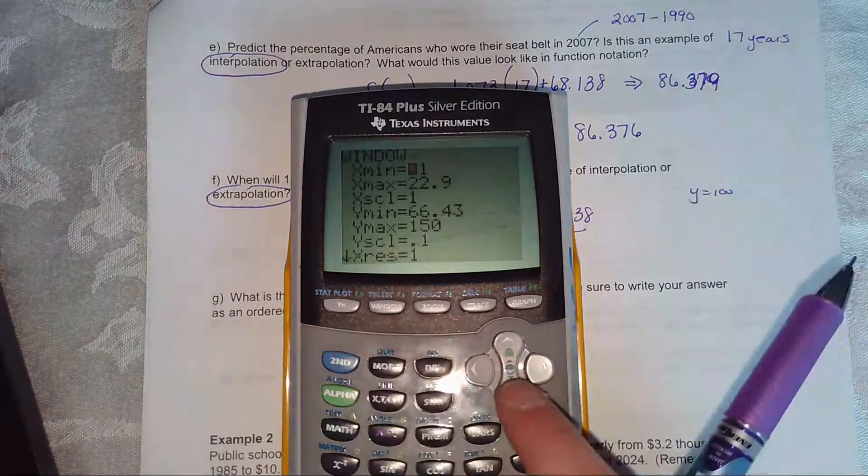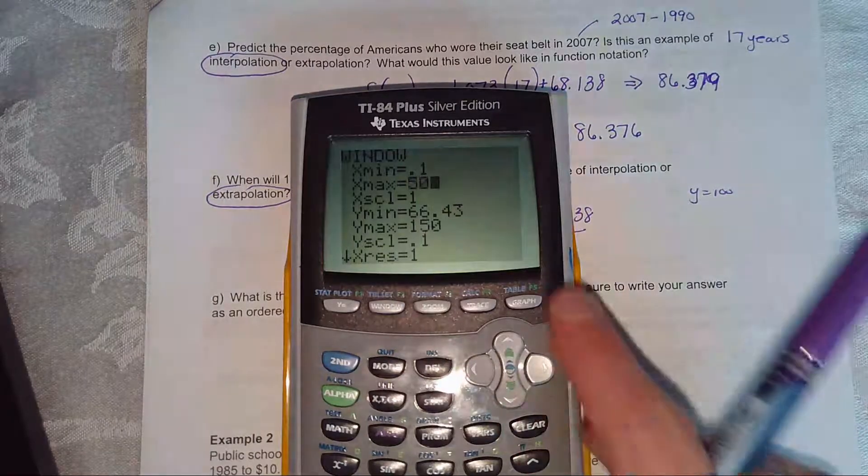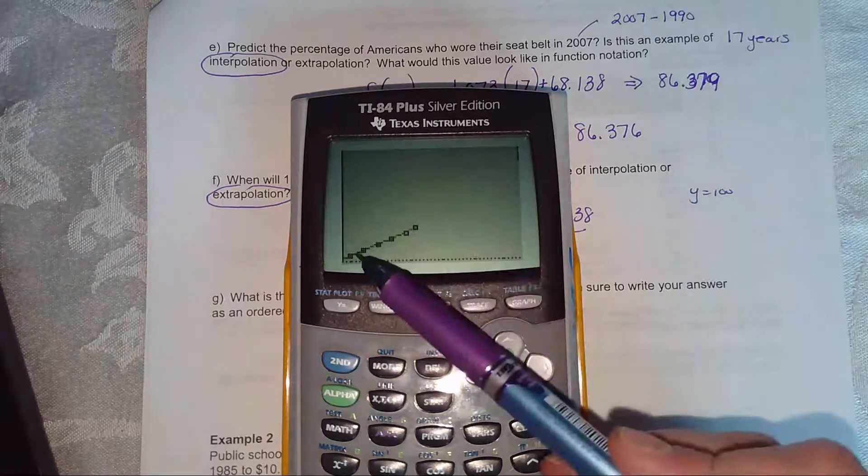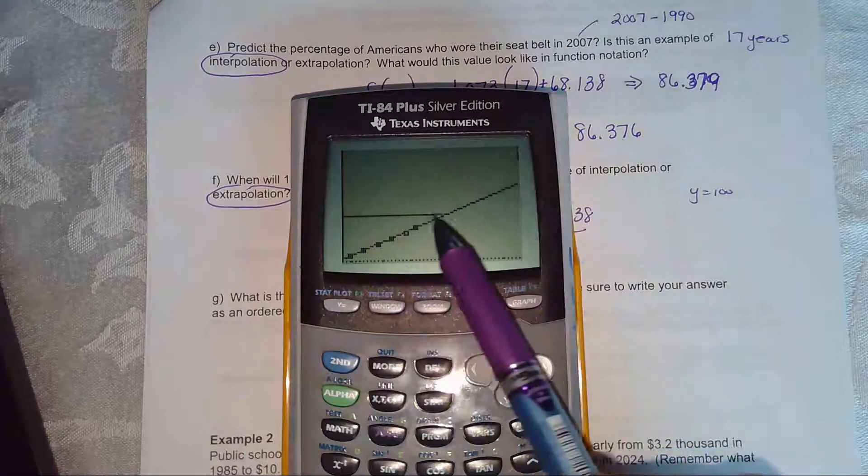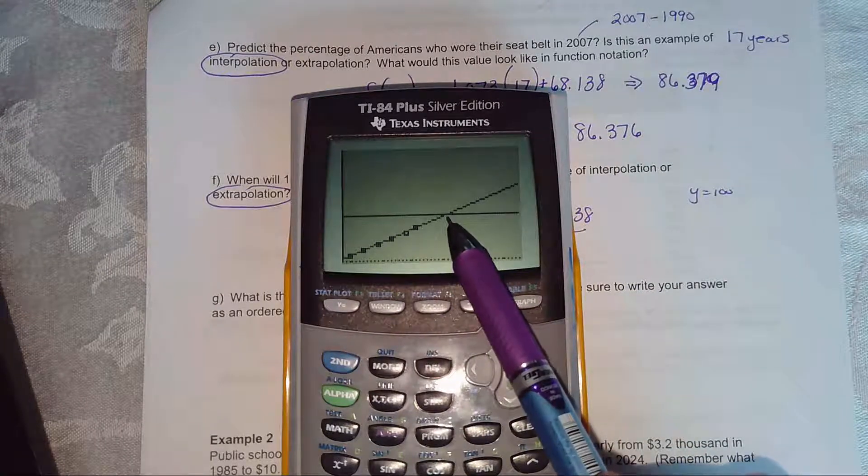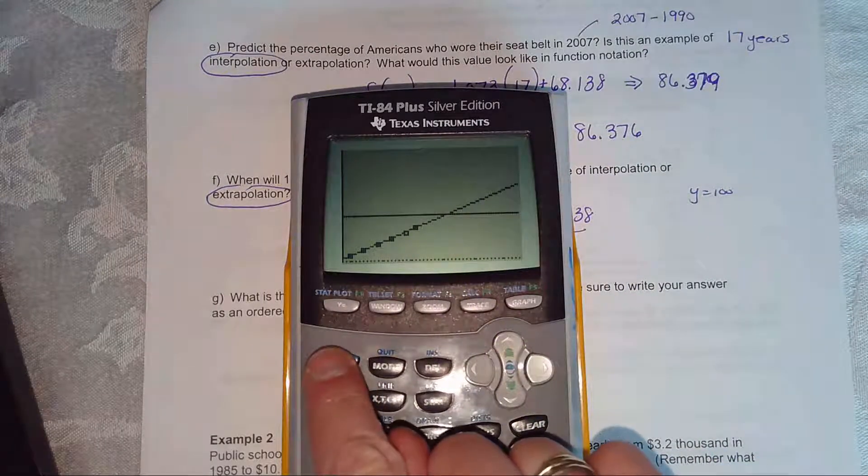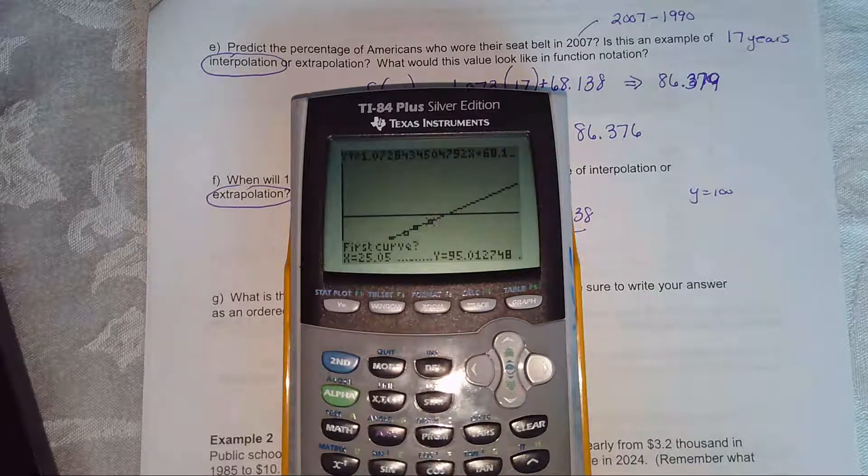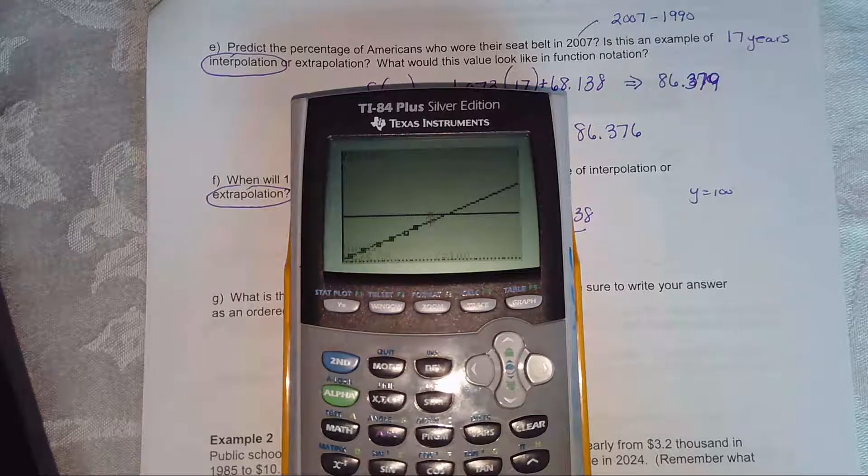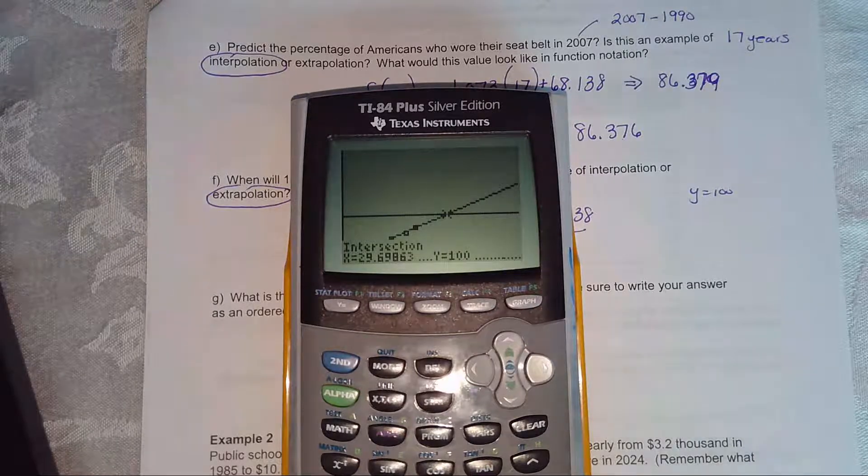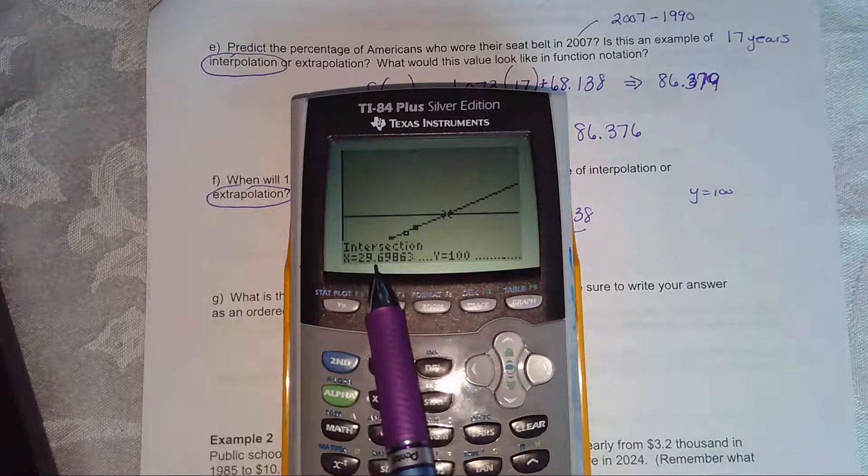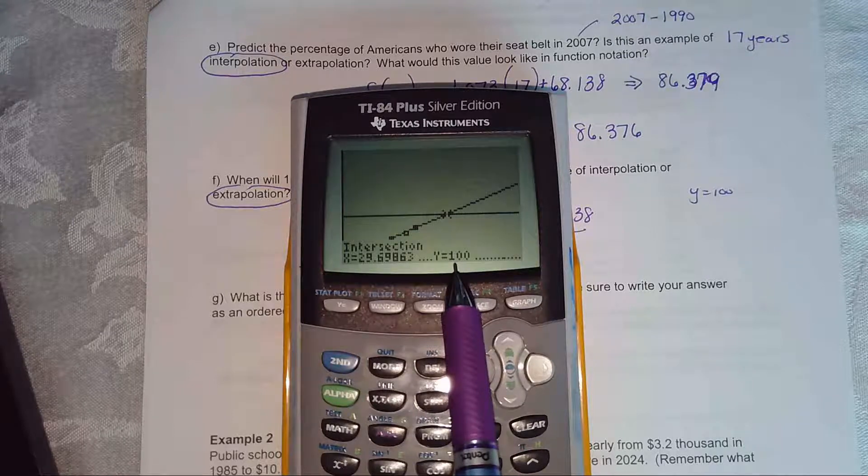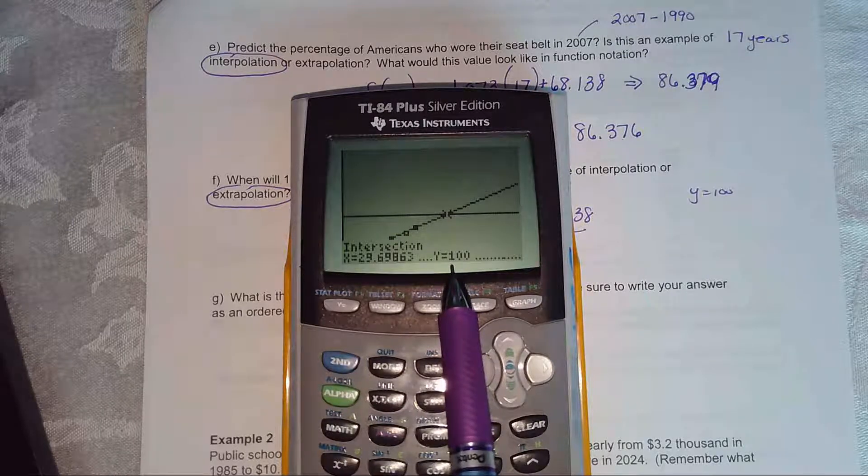So I'm going to go to my window. I'm not sure what the answer is. Let's make the x value, the biggest x value would be 50. So there's my percentages. There's 100%. That's where they cross. So if in doubt, go to calc option 5 and 1, 2, 3 enters. So when t is 29.6, 100% of the population, according to this model, were seat belts.